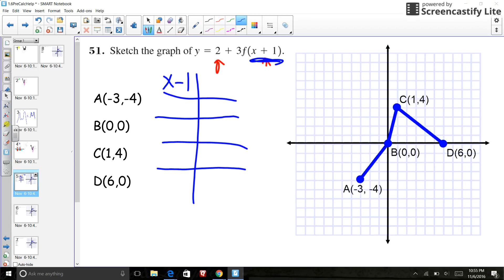So I'm just going to go through, and I wrote down all of my points. I did an A, B, C, and D. And so what I know is that my x value of everything is going to shift left 1.